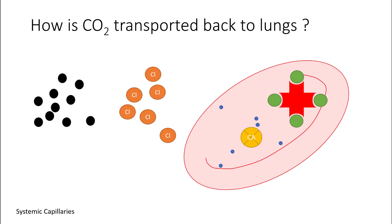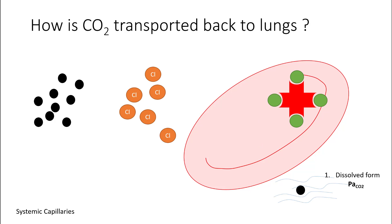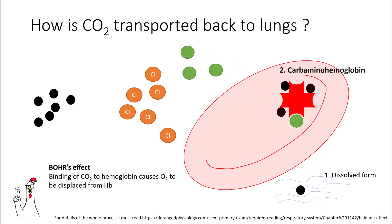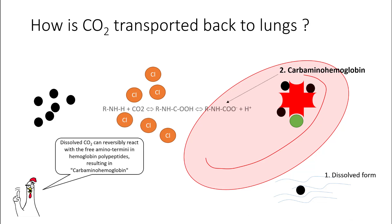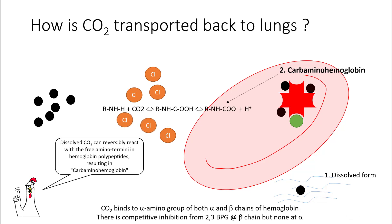Let's talk about how carbon dioxide is transported back from the cellular level to the lungs. The black dots represent carbon dioxide molecules. Some of the carbon dioxide is transported in dissolved form, which gives rise to the partial pressures of carbon dioxide. Carbon dioxide also attaches to the hemoglobin molecule and aids in the release of oxygen by Bohr's effect, transported as carbaminohemoglobin. Both alpha and beta chains of the hemoglobin can carry carbon dioxide.